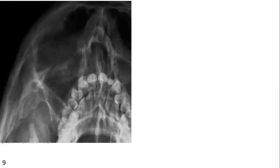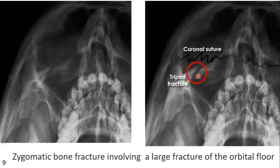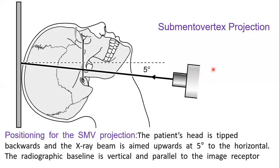In this picture, you can also appreciate — if you follow the Campbell's lines — a fracture or destruction in the orbital floor area.